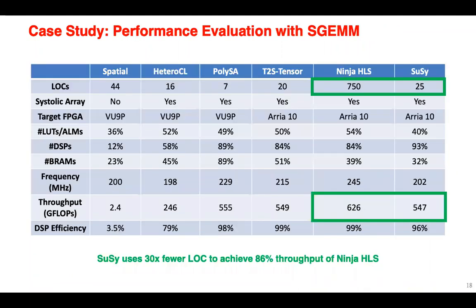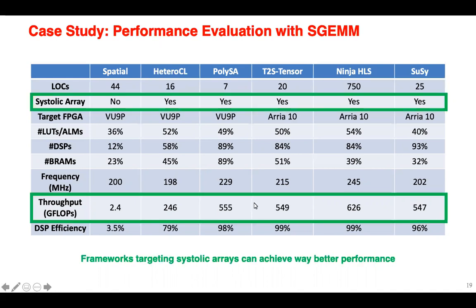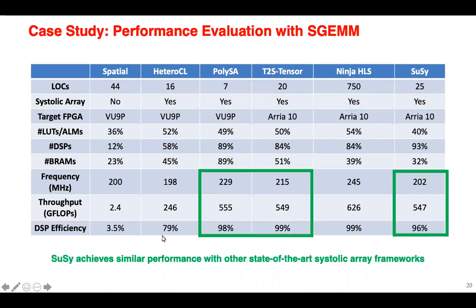For performance evaluation, compared with manually optimized HLS code (Ninja HLS), we use around 30x fewer lines of code to achieve around 86% throughput of Ninja HLS. Comparing frameworks that target systolic arrays versus those that do not, like Spatial, there is a large performance gap in favor of systolic array implementations. Finally, compared to other state-of-the-art systolic array frameworks, we achieve similar performance in terms of both throughput and DSP efficiency.